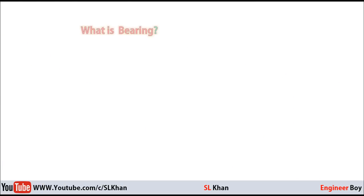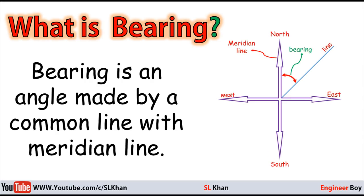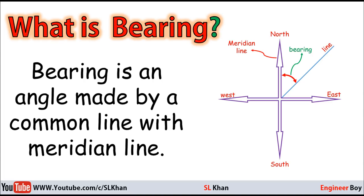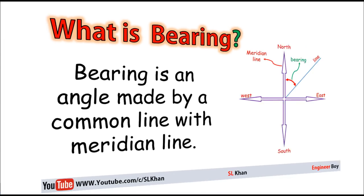A bearing is an angle made by a line with the meridian line. The meridian line is just the north-south line. If you see in the diagram, the blue line is making an angle with that meridian line, and that angle is known as a bearing. That's not a common angle — if two lines make an angle with each other, that's a common angle. But if a line makes an angle with the north-south reference line, that angle is called a bearing.